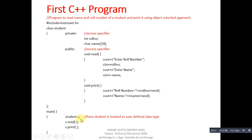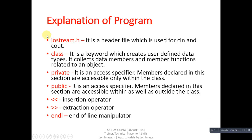The 'student' class is a user-defined data type. Member functions are accessed using s.read and s.print. To summarize: iostream is the header file for cin and cout; 'class' is the keyword that creates user-defined data types; 'private' and 'public' are access specifiers. The insertion operator (<<) is used with cout and the extraction operator (>>) is used with cin. 'endl' is the end-of-line manipulator.